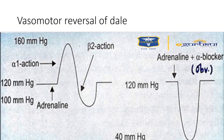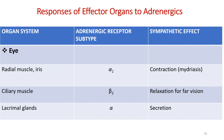Reversal of adrenaline: rapid injection of adrenaline causes a rise in blood pressure due to alpha-1 receptor activation causing vasoconstriction. Within a few minutes, re-uptake or dissipation of adrenaline causes a fall in blood pressure; at lower concentrations, beta receptors are more sensitive and vasodilation occurs via beta-2, causing a fall in blood pressure. If phentolamine or an alpha blocker is given prior to adrenaline, only the fall in blood pressure is seen — this is called the Vasomotor reversal phenomenon.